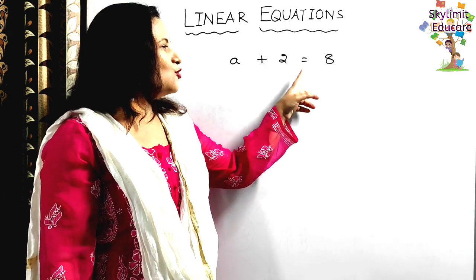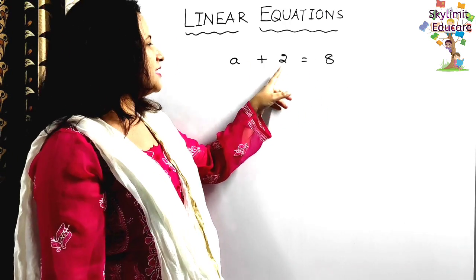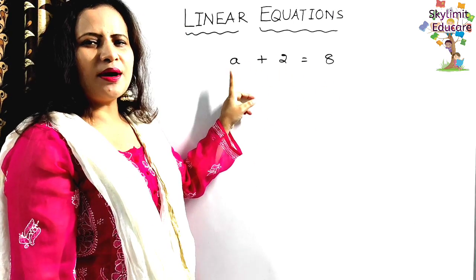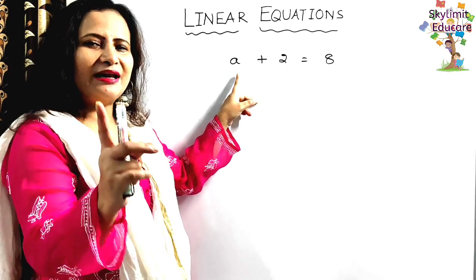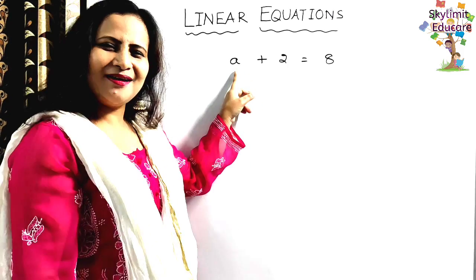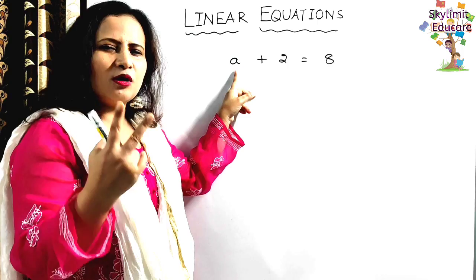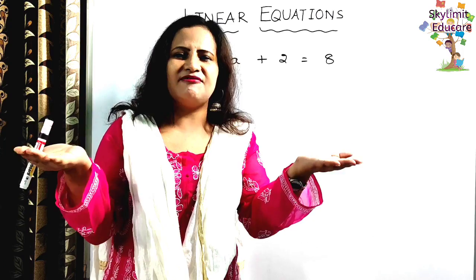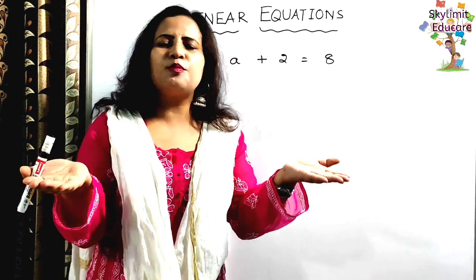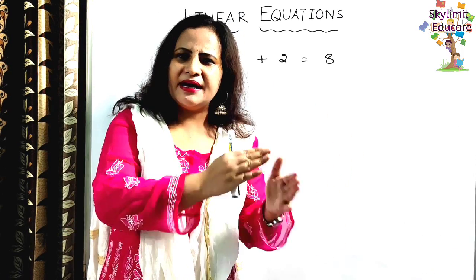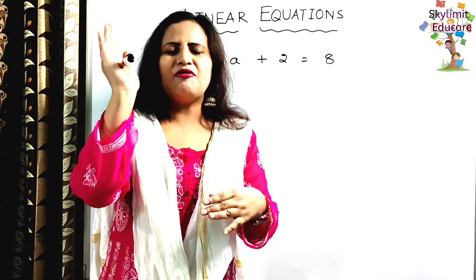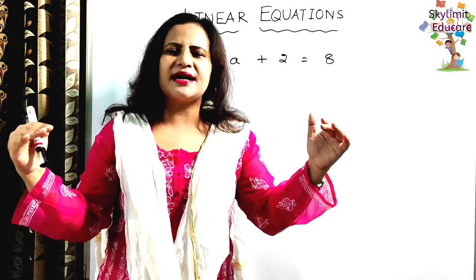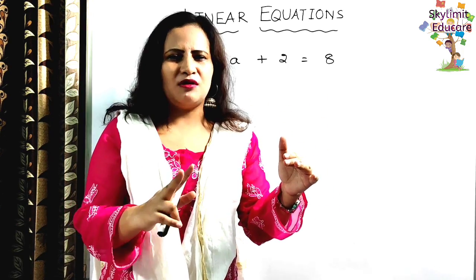Consider the linear equation with constants 2 and 8 and variable a. There are two ways of solving it. Since the left-hand side must always equal the right-hand side, whatever you add to the left-hand side must be added to the right-hand side, and whatever you subtract from the left-hand side must also be subtracted from the right-hand side.